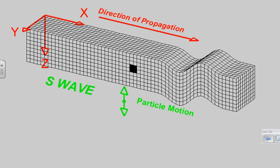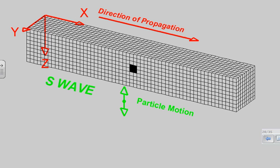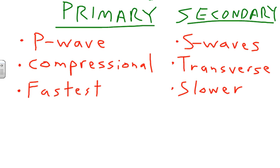So the P wave moves by pushing back and forth — that's a compressional wave. The S wave moves up and down — if you stare at it for a while you might get dizzy. Because of how they move, the P wave is able to travel through all sorts of materials.